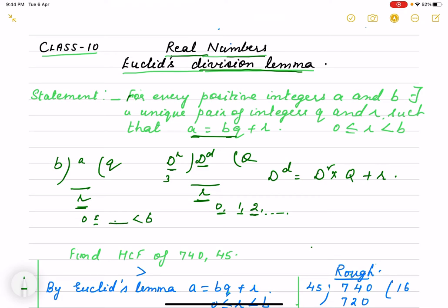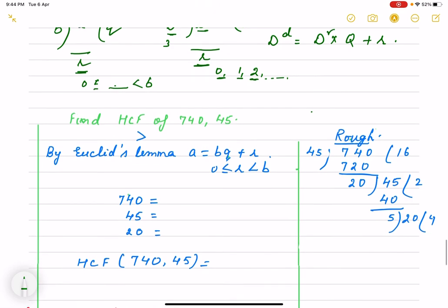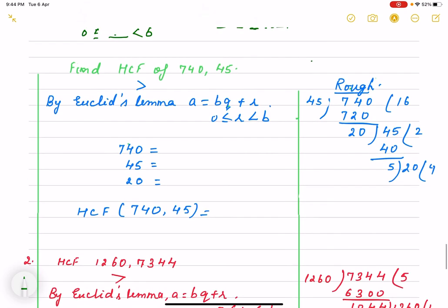So, this way we find out HCF of any number. If you remember, long division method again, division algorithm also we have done earlier. And long division method to find out HCF. How do you find out? I recall it again.